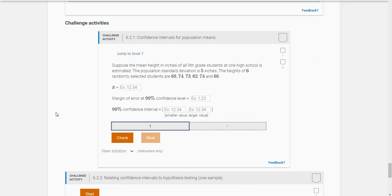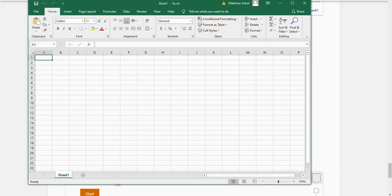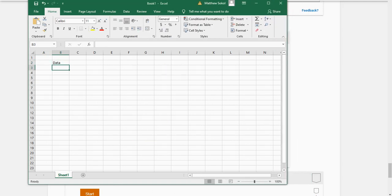The first one says suppose the mean height in inches of all ninth grade students at one high school is estimated. The population standard deviation is five inches and the heights of six randomly selected students are given. It says first find X bar. So I'm going to load up Excel and do this in Excel.